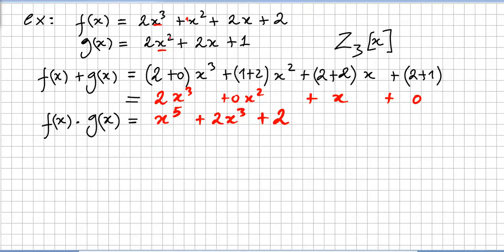For the product, note that 2 times 3 gives degree 5 in x. For example, the leading coefficient 2·2 = 4 = 1 in Z_3, giving x^5. And 2·2·2 = 0 in Z_3 eliminates x^6. If you have any problems, please let me know.